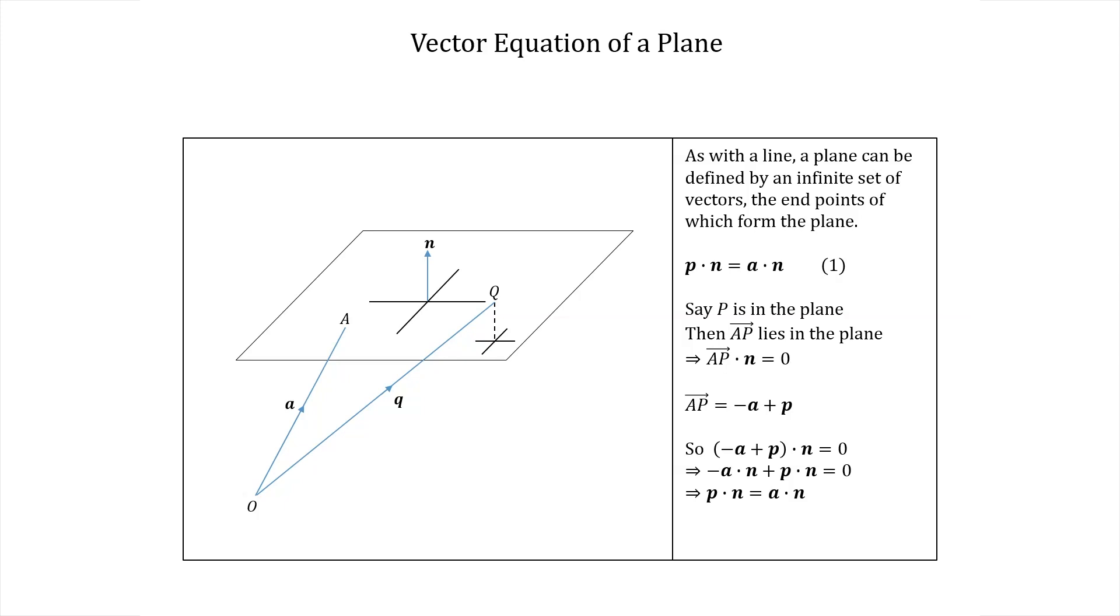Well, without going into too much detail, hopefully you can see that aq, this vector here, does not lie in the plane and hence aq is not perpendicular to n. So aq·n does not equal 0.